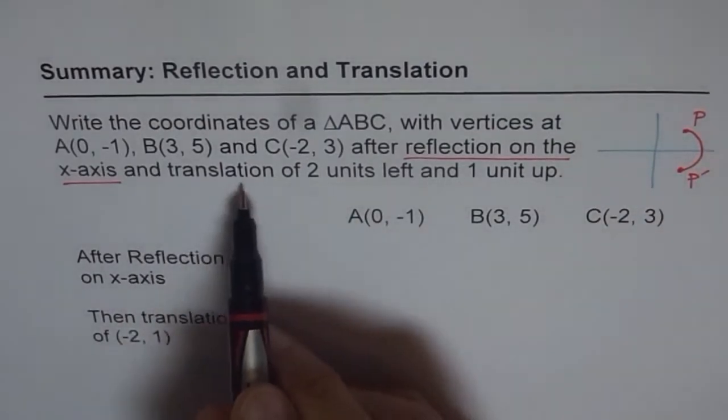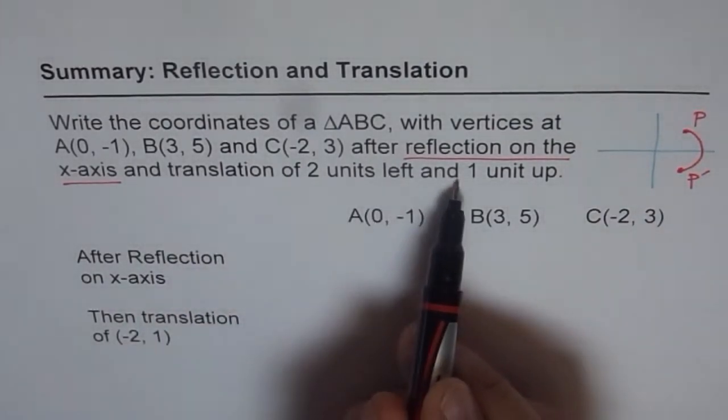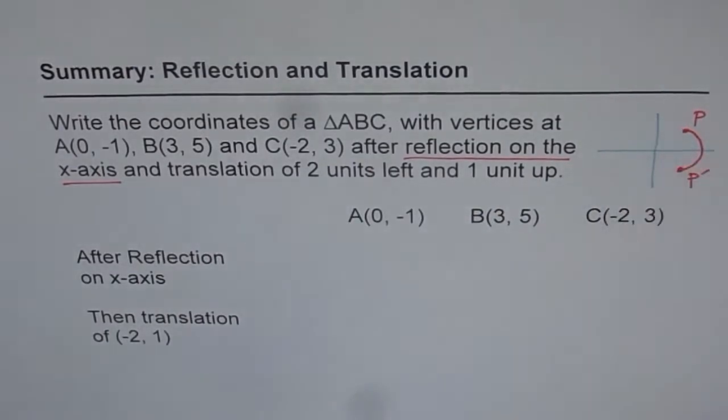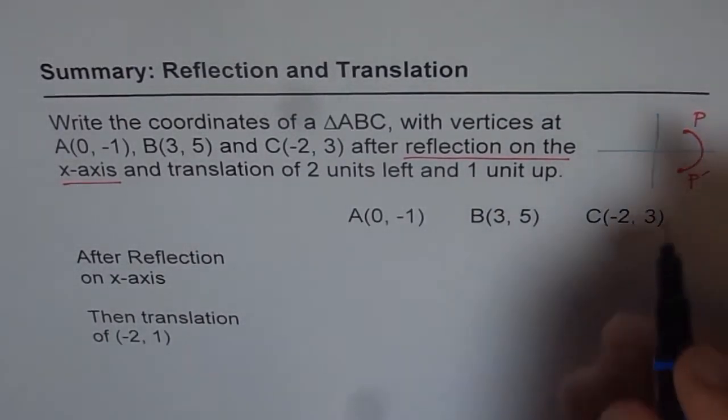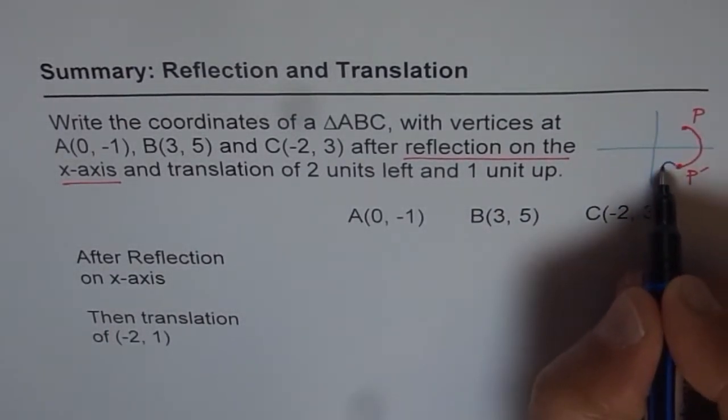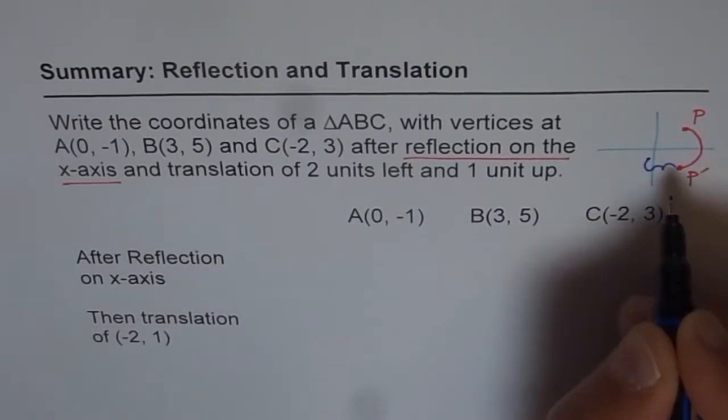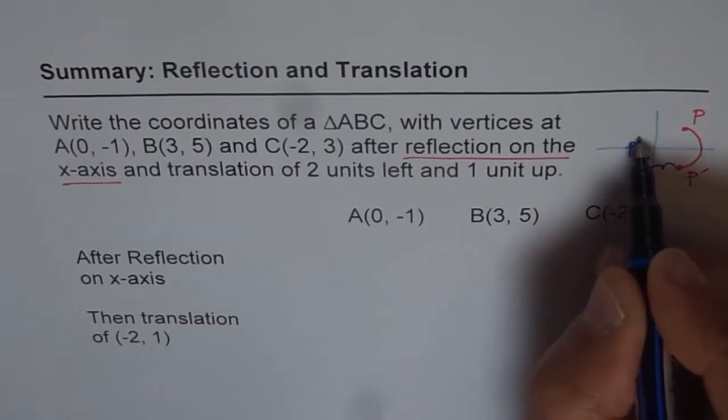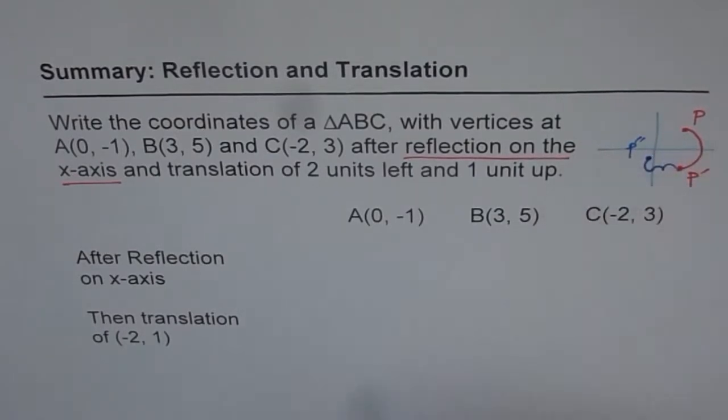And then translation of 2 units left, 1 unit up. 2 units left, let me use another ink. So let us say 2 units left means 1, 2, and 1 unit up. So that would be our P'', the final position. So that is kind of transformation which we are trying to do here.